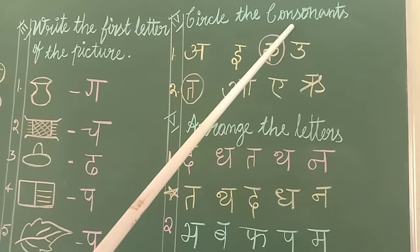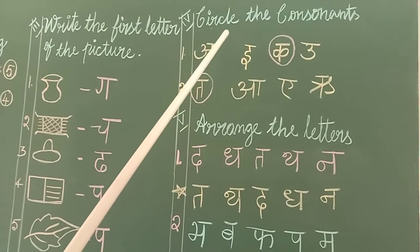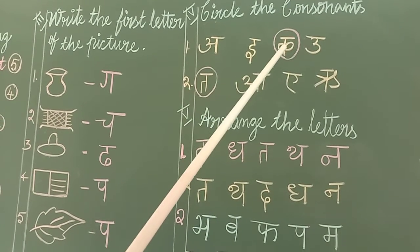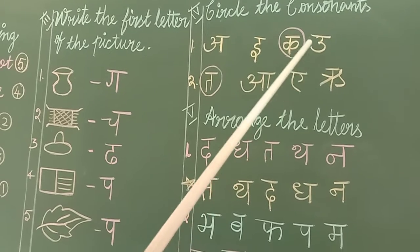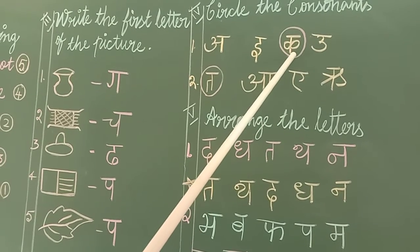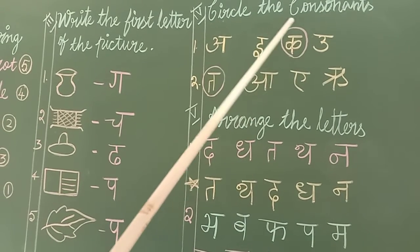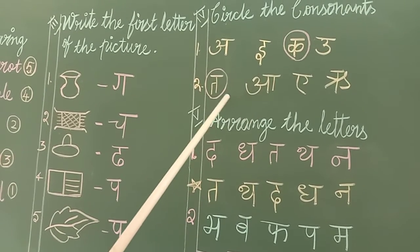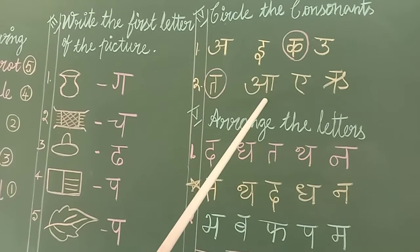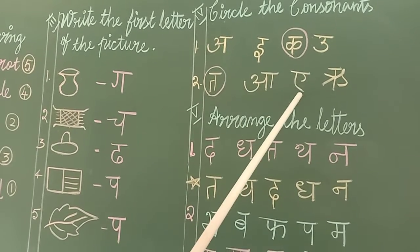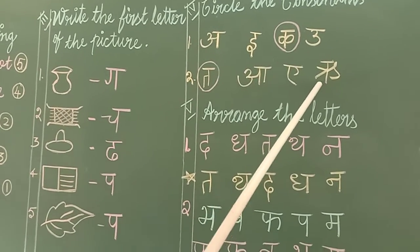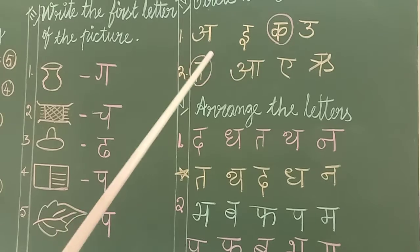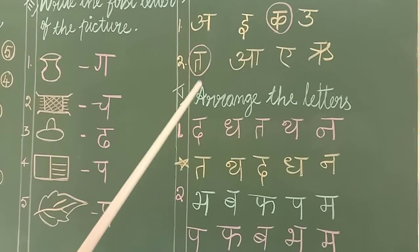Fourth, circle the consonants. A, E, Ka, U. Gagari — this letter Ka is a consonant, so round the letter. Next is Tha — A, A, Ru — this letter Tha is a consonant, so round the letter.